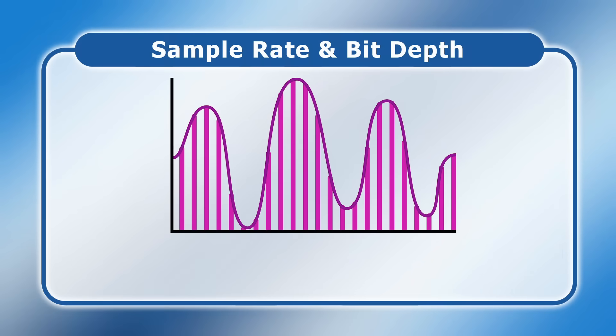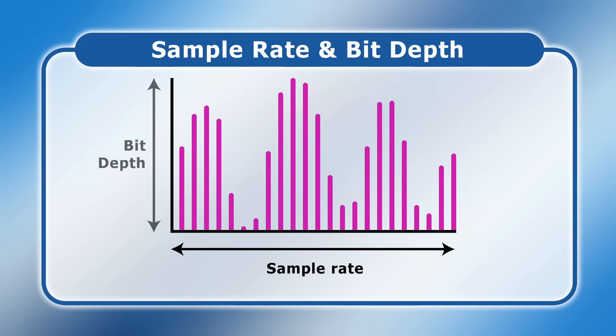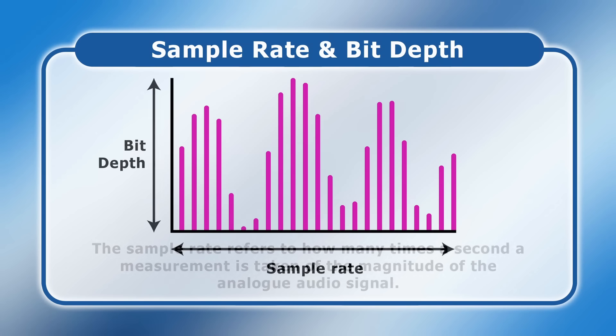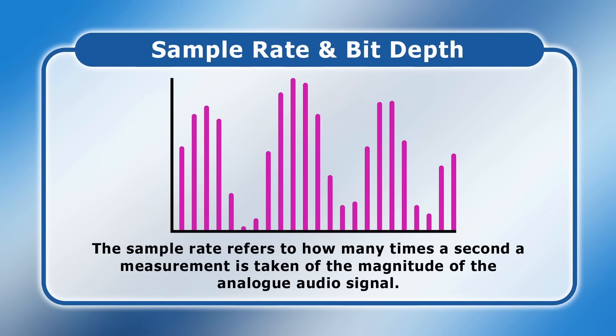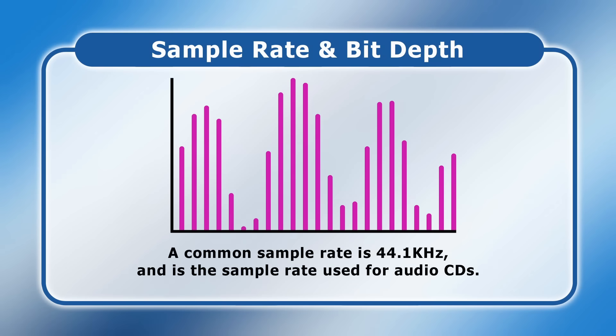Digital audio files provide an approximation of analog audio waveforms, and before any compression is applied, their quality is determined by two parameters known as the sample rate and the bit depth. The sample rate refers to how many times a second a measurement is taken of the magnitude of the analog audio signal. A common sample rate is 44.1 kHz, which stores a digital value 44,100 times every second.